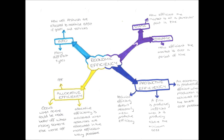Next, we have productive efficiency. An economy will be productively efficient when it is producing at the lowest cost possible. A firm is productively inefficient when it is producing above the minimum cost. So productive efficiency is simply about how cheaply you can produce things — you are productively efficient if you are producing at the cheapest cost possible.